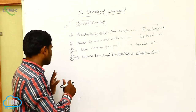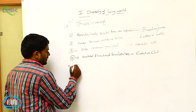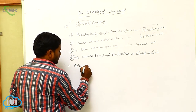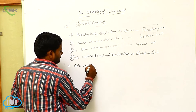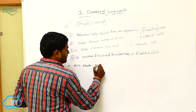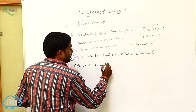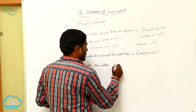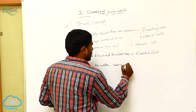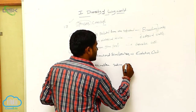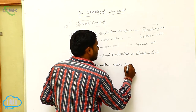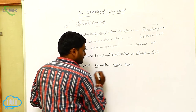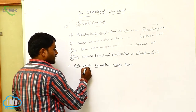Species examples: if you see Apis dorsata, Apis mellifera, Apis indica, and Apis florea — these are all the same genus with different species.